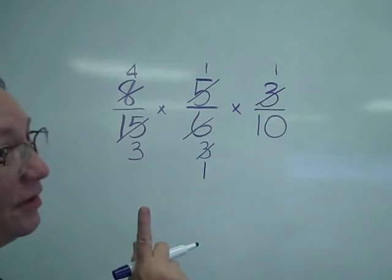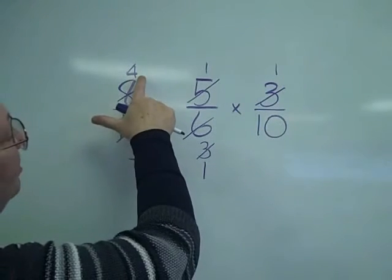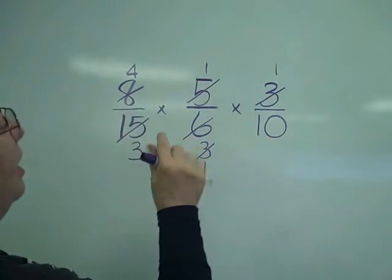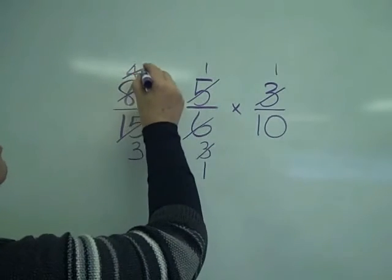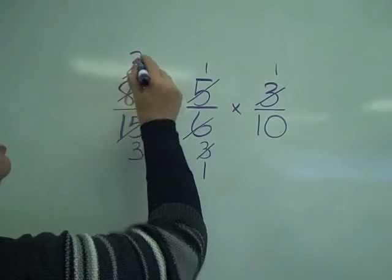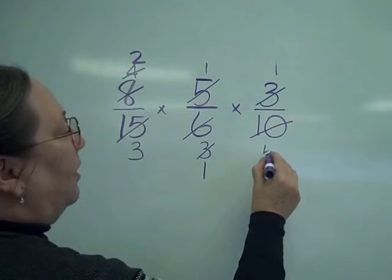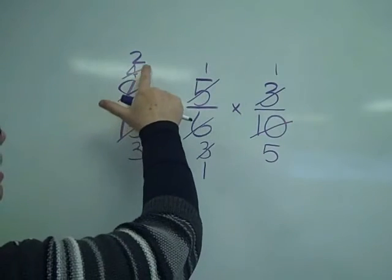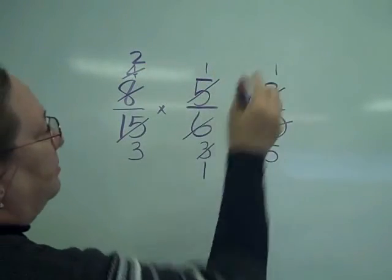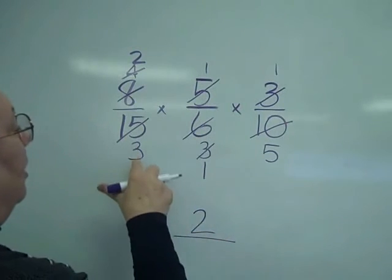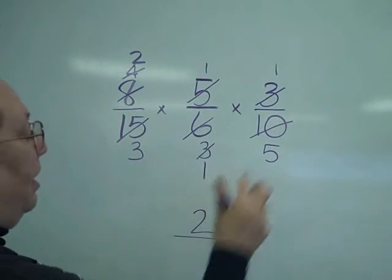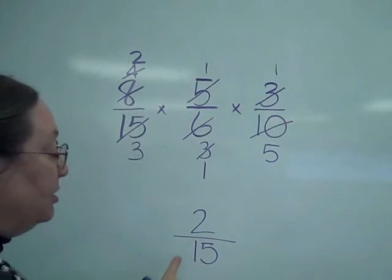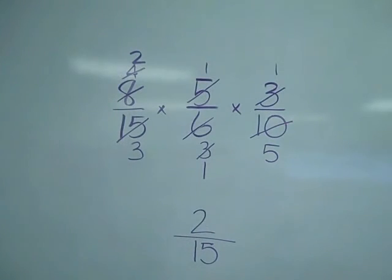I have one more simplification — it's a little more difficult to see because it's using an already simplified number with one that's not. But notice they're both even, so I can take 4 divided by 2 is 2 and 10 divided by 2 is 5. Taking the top numbers: 2 times 1 times 1 is 2, and 3 times 1 times 5 is 15. This is not an improper fraction, so that is my final answer.